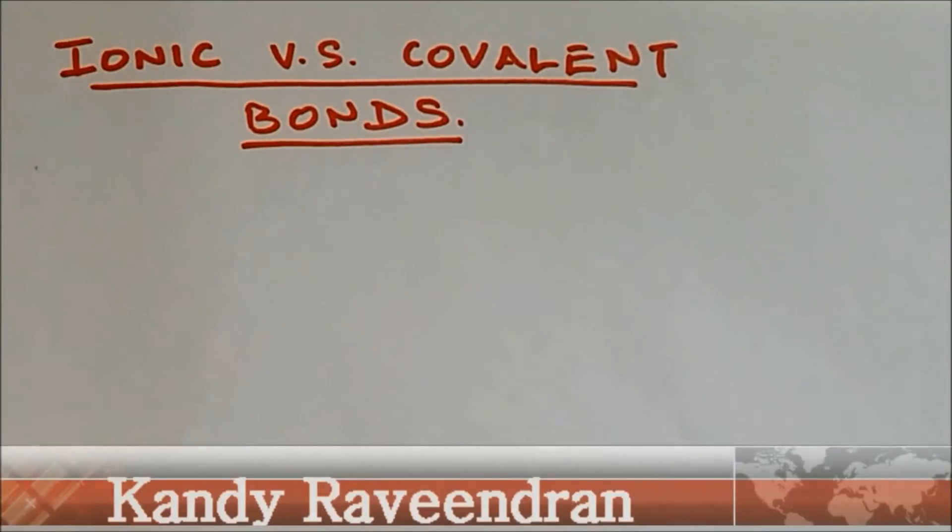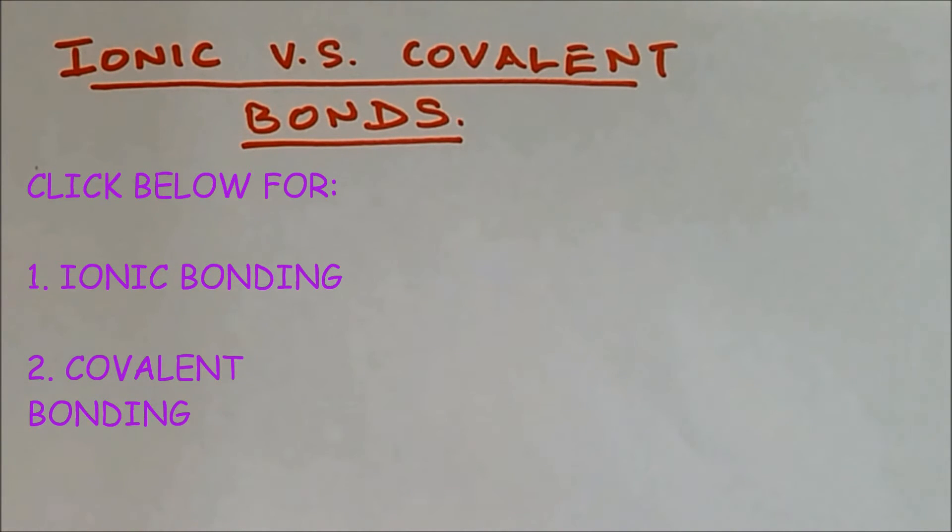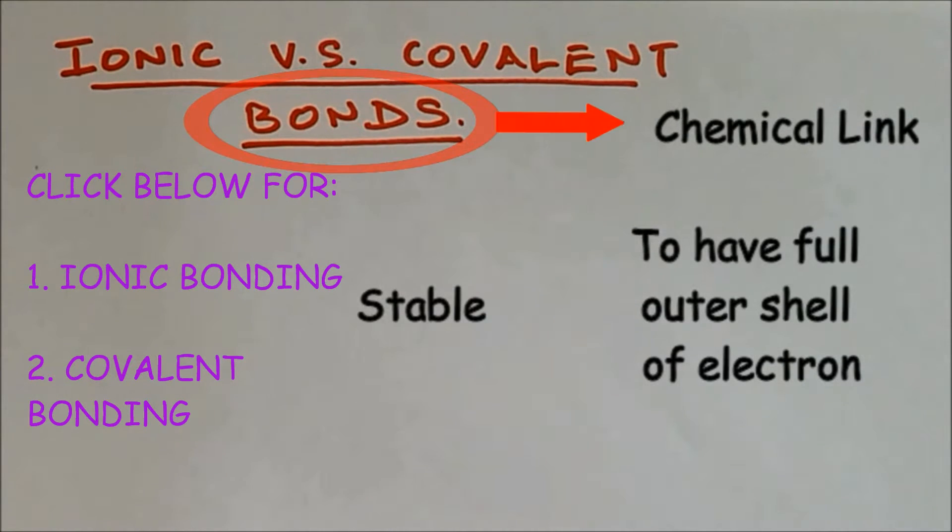Hi everyone, welcome to Science Tutorial for You. In this video I'm going to compare ionic and covalent bonds. So what are bonds and why do atoms make bonds? Now bonds mean link. The reason why atoms bond together is in order to have full outer shell of electrons.